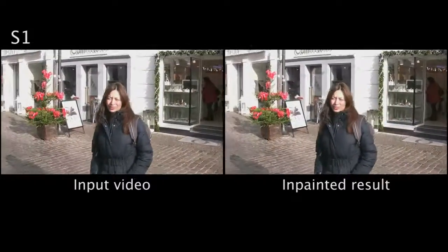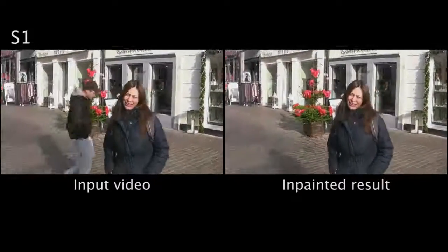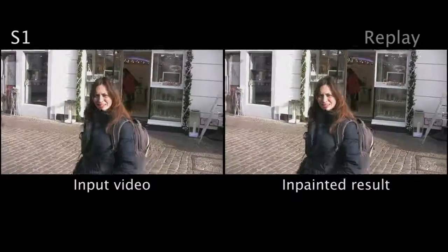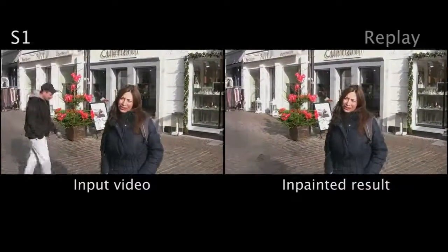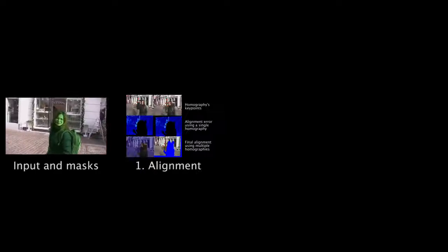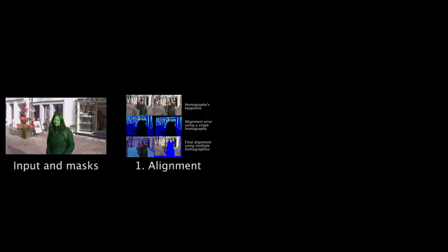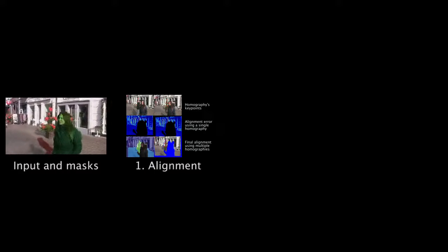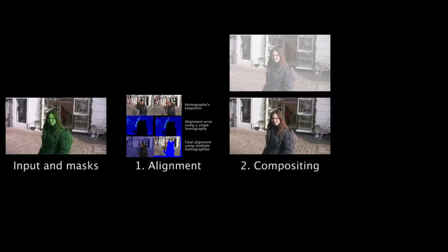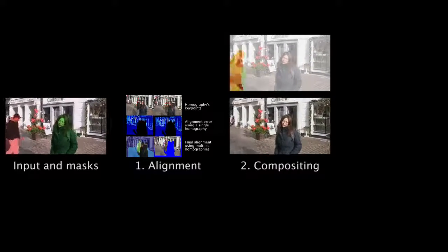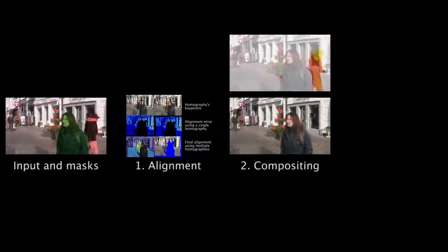In this video, we describe an in-painting method for removing dynamic objects that occlude static scene backgrounds. Our method receives as input a video and a mask marking both the dynamic object to be removed and the other dynamic objects that should remain in the scene. To remove objects, we first align frames to each other and then compute a composite of these aligned frames such that we can replace the object to be removed with background.